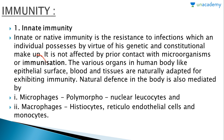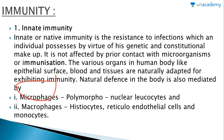Various organs in the human body like epithelial surfaces, blood, and tissues are naturally adapted for exhibiting immunity. Natural defense is also mediated by microphages, also called polymorphonuclear leukocytes (PMNLs), and macrophages, which include histiocytes, reticuloendothelial cells, and monocytes. Our skin, mucous membranes, and acidic environments in the gastrointestinal tract are all forms of innate immunity provided from birth.